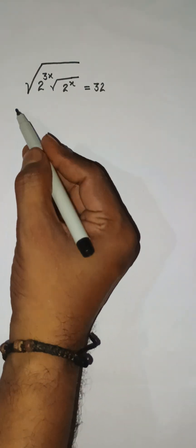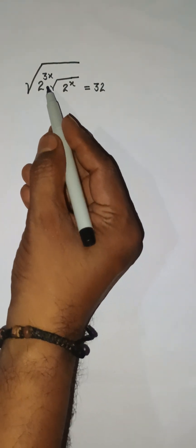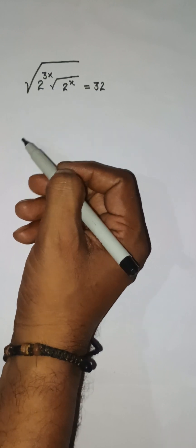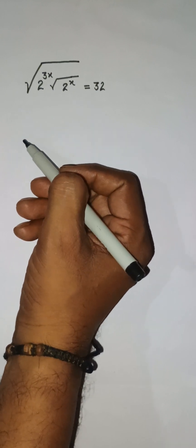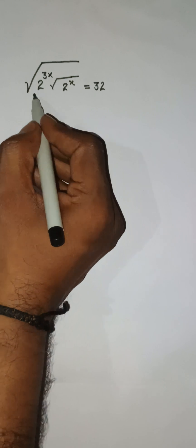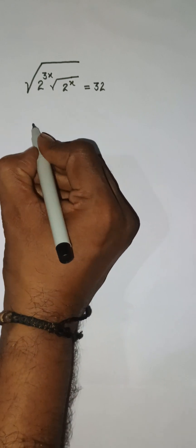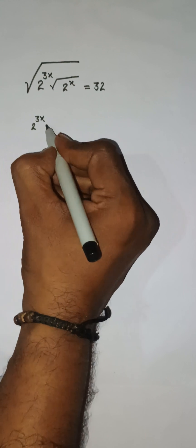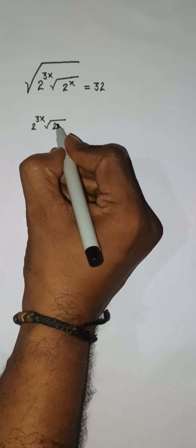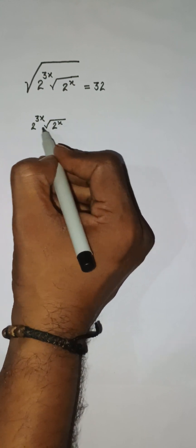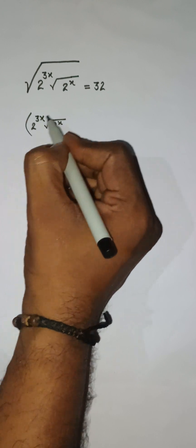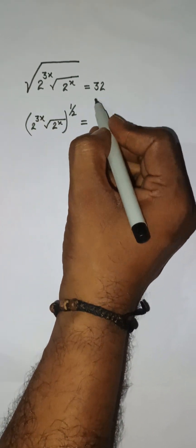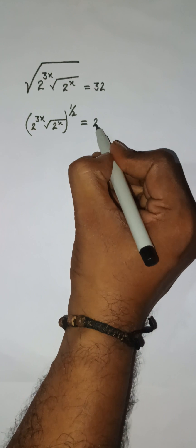Hello everyone, we have this problem: root under 2 to the power 3x, multiplied by root under 2 to the power x, equal to 32. Let's solve this one within 10 seconds. We have a square root, so I'm writing this square root in the form 2 to the power 3x into root under 2 to the power x, and this square root can be written as the power 1 by 2. This 32 can be written as 2 to the power 5.